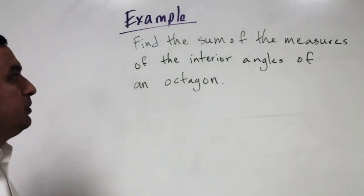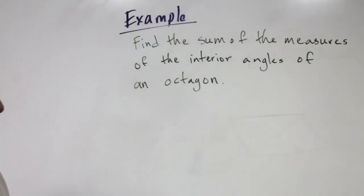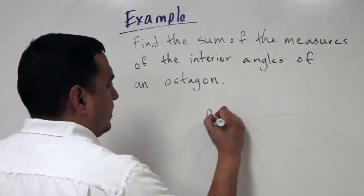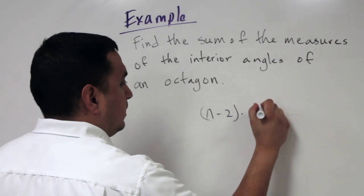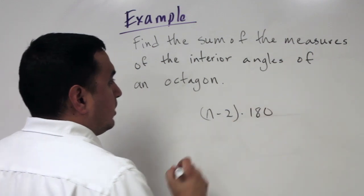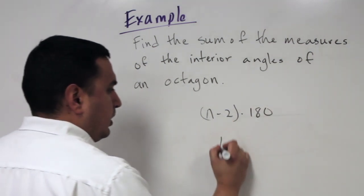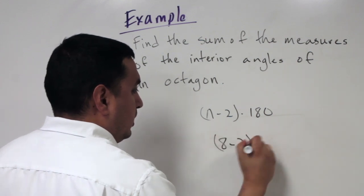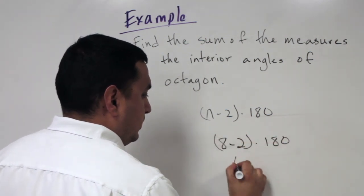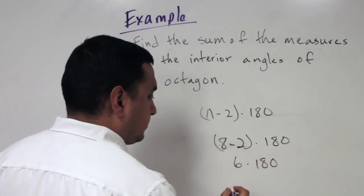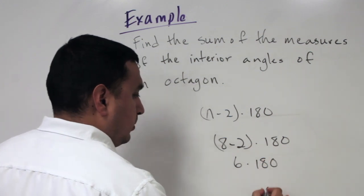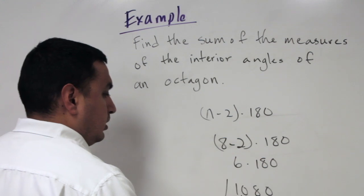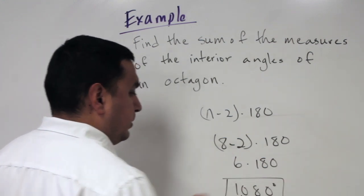Find the sum of the measures of the interior angles of an octagon. An octagon is an 8-sided shape, so using the formula (n−2) times 180, we substitute 8: (8−2) times 180 equals 6 times 180, which equals 1080 degrees.